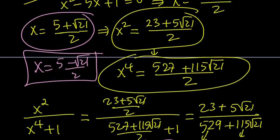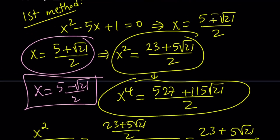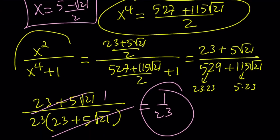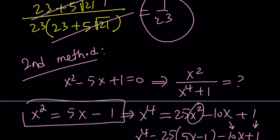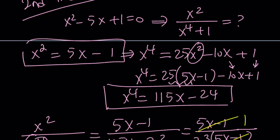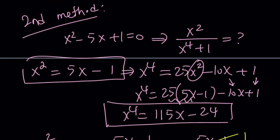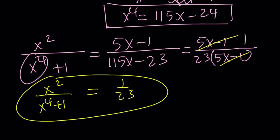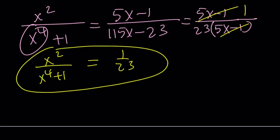So the first method, just to recap real quick, involved solving for the quadratic using one of the roots, doesn't matter which one, and plugging it into x squared and x to the 4th to evaluate numerically. And then since we have everything numerically, we were able to substitute and at the end we were able to simplify and we got 1 over 23. Second method kind of involved a more polynomial approach where we isolated x squared and then used it to find